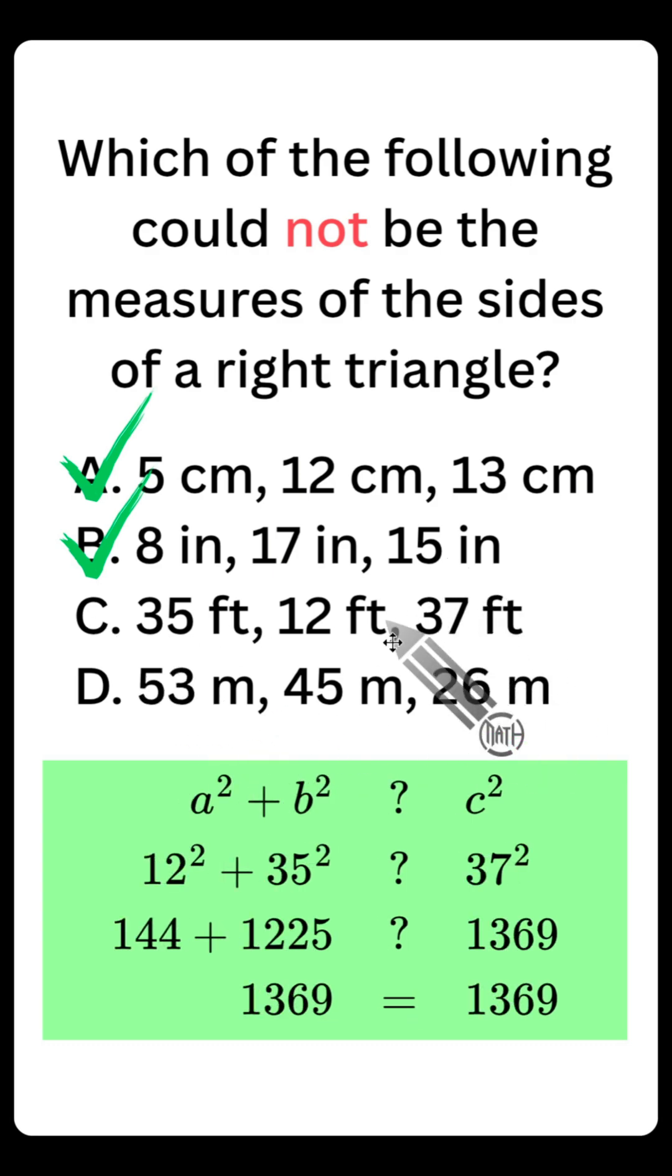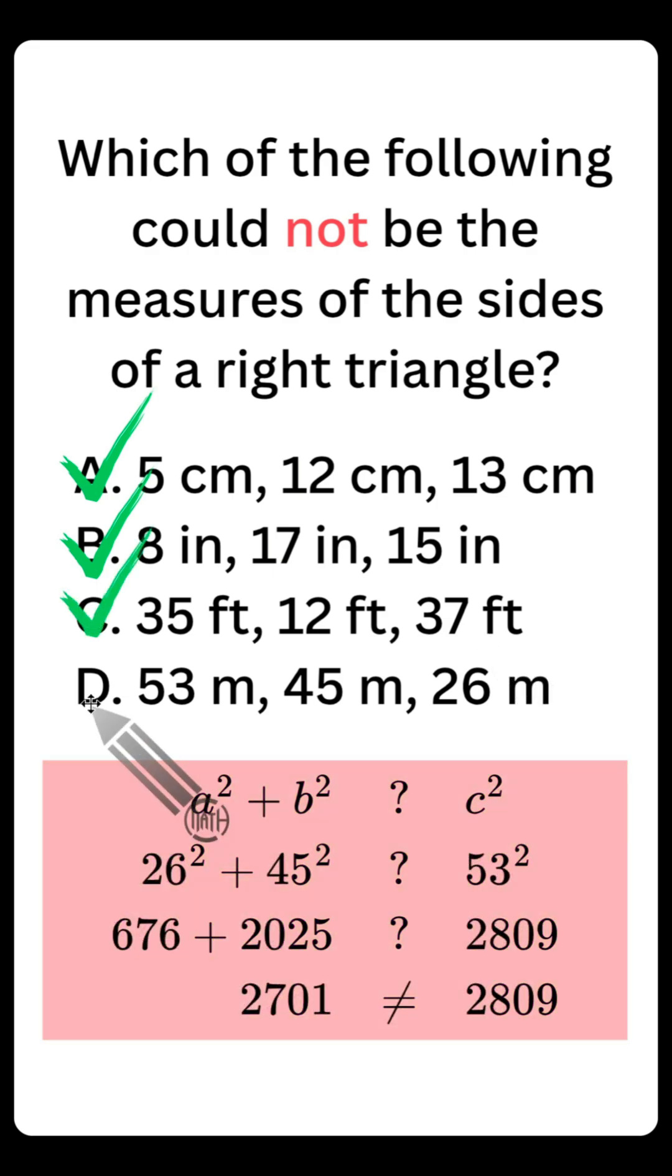Checking C. 37 is the longest side. That is our C. Substituting everything in, of course, you will need a calculator here, no doubt about it. But working this out, these three sides do make a right triangle, which means choice D must be the one that does not.